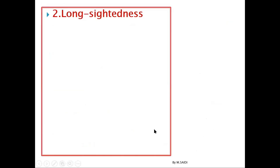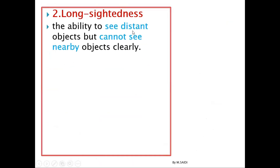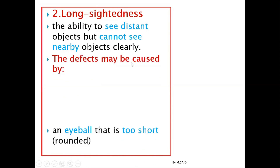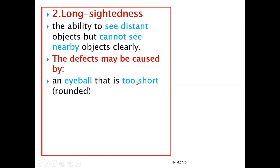Number two, we have what is called long-sightedness. It means that you can see objects which are far — long distance — but you can't see objects which are near. It is the ability of the eye to see distant objects but not nearby objects. This defect may be caused by: number one, the eyeball is too short, meaning the image is going to form behind the retina.